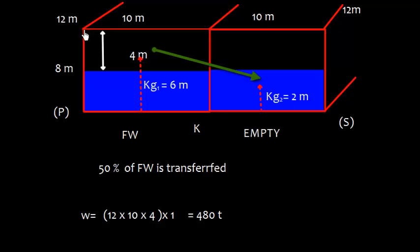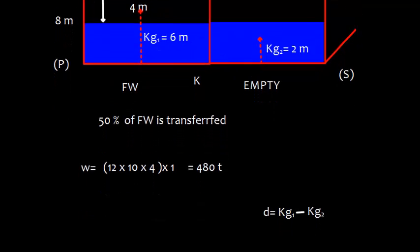We need to find the distance shifted, which is KG1 minus KG2. If we look at this here, KG of the ship is also 6 meter, and KG1 is also 6 meter, and KG2 is also 2 meter.